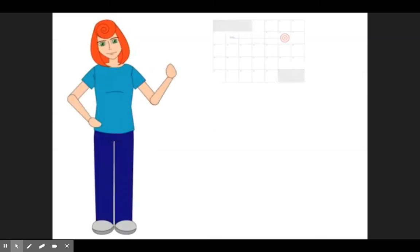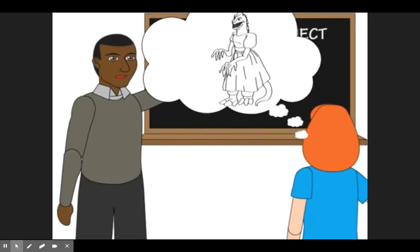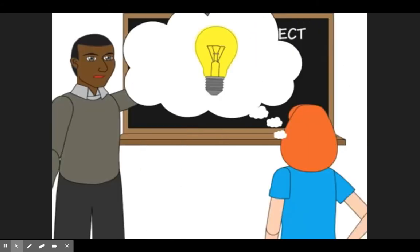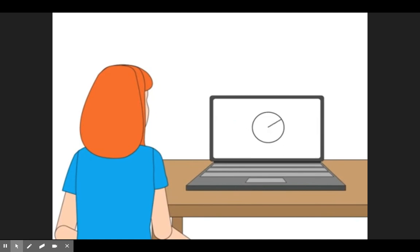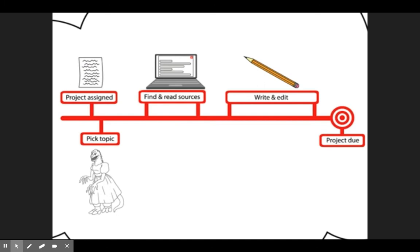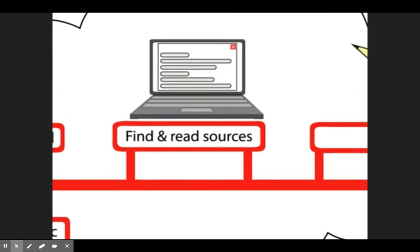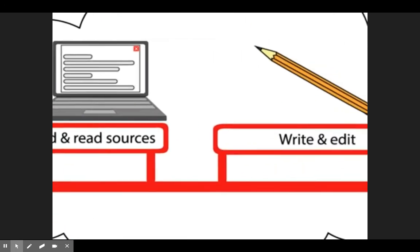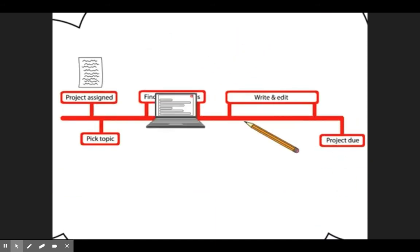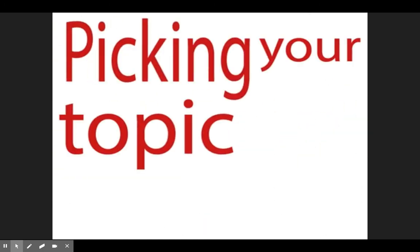Meet Jenny. Jenny has a research project due in a few days. She picked a topic when her professor first assigned the project — her favorite TV show, Bridezillas. It seemed like a good idea, but now that she's doing her research, she's having a lot of trouble finding sources. She's freaking out. Jenny's problem started with her mental model of the research process, which she sees as a one-way street. Like many students, Jenny thinks that once a project is assigned, she should pick her topic right away, then move on to finding sources and reading through them, and once she has all her sources, she can start writing. But the research process is a lot messier than that, and picking your topic is intertwined with finding and reading sources and writing and editing your paper. Picking your topic is research.